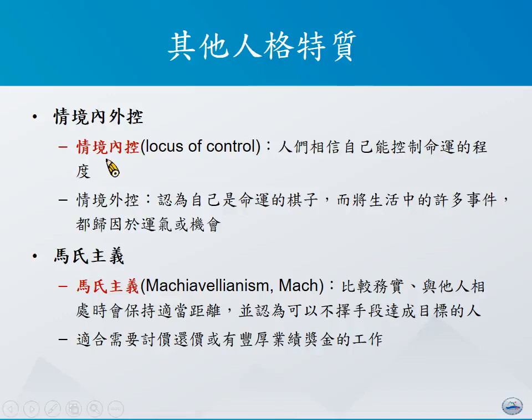以情境内控的人而言，他们相信命运掌握在自己手上，所以当面对到不顺遂的事情时，他会努力想办法来改变自己的命运。而属于情境外控的人，较容易把生活中所有的事情归类给所谓的运气跟机会来决定，所以他会认为自己再努力也没有什么用。因此，当员工属于这样的人时，他面对挑战的能力可能会比较差。